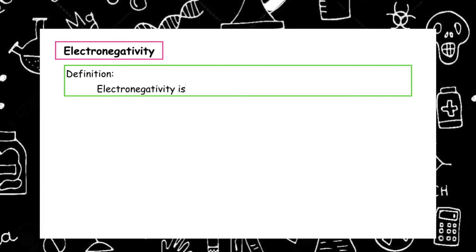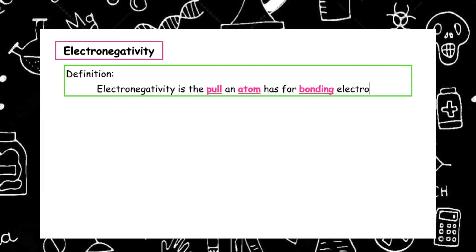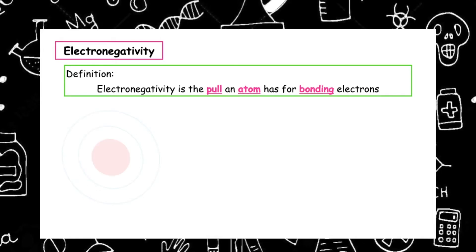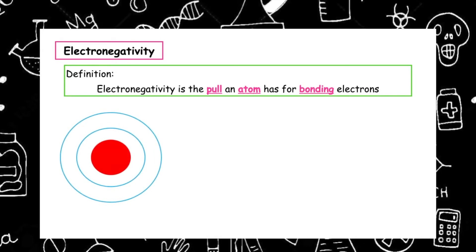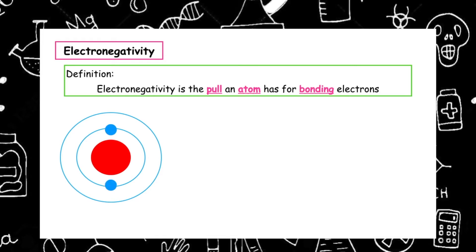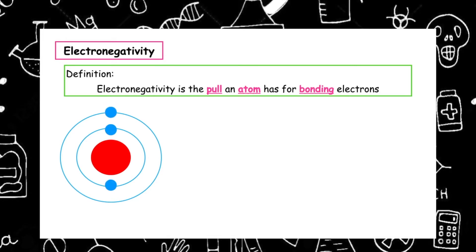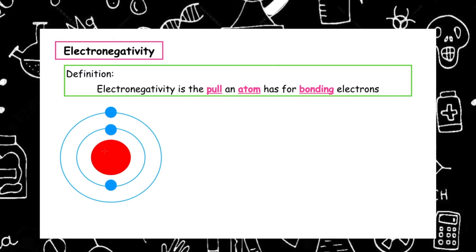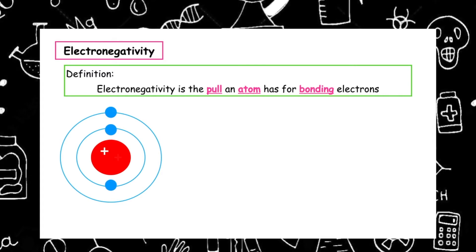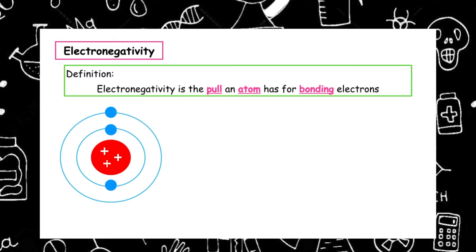Electronegativity is the pull an atom has for bonding electrons. All elements want to achieve stability by having a full stable outer electron shell, so the outer electrons of an atom are the bonding electrons. What pulls them are the positive charges, which are the protons found inside the nucleus.